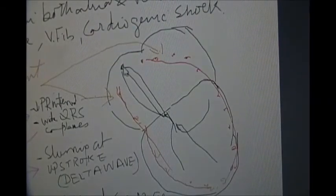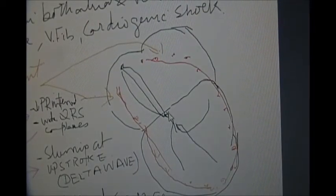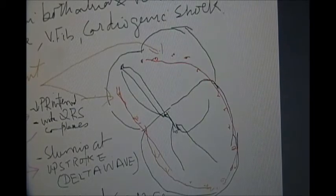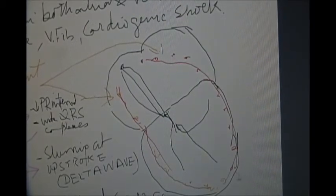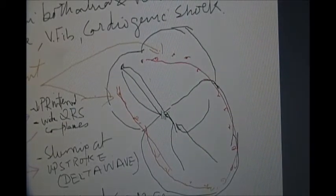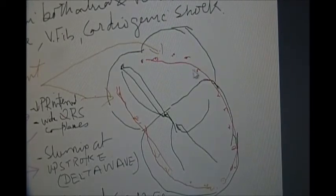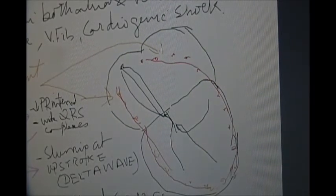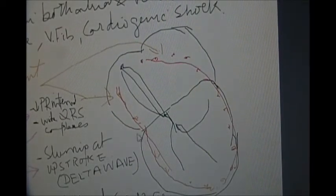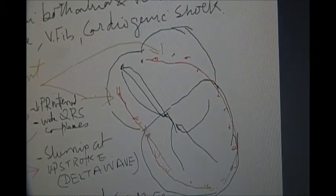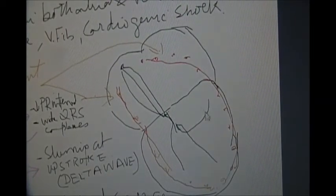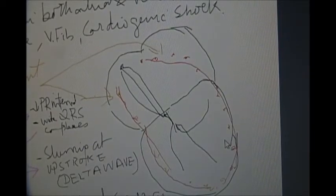This is the normal conduction starting from the SA node to the AV node and through the bundle of His to the ventricle. So there is a delay over here normally, but this is the bundle of Kent, an abnormal passage from atria to the ventricle. So there is no delay. The atrial and the ventricular heart rates are the same.